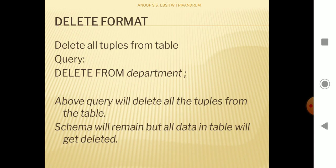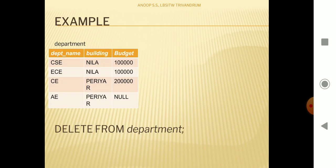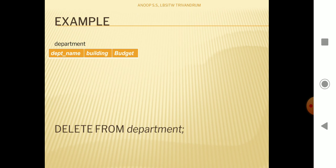If we have a department table and execute DELETE FROM department, then all the tuples in the department table will get deleted. Only the schema of the department will remain in the database — the table structure remains, only the data gets deleted. DELETE FROM deletes the tuples, not the table itself.